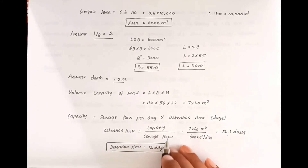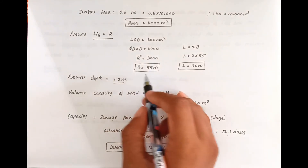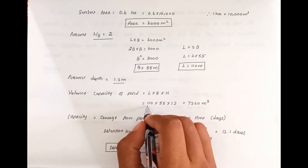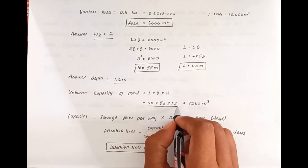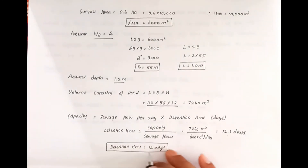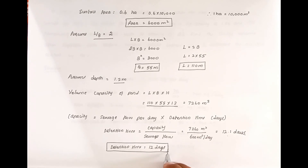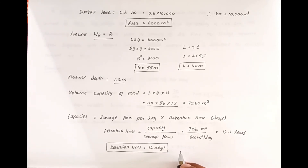So the final dimensions of the oxidation pond are: length 110 m × breadth 55 m × depth 1.2 m, with a detention time of 12 days. This completes the design of the oxidation pond. We will see the next video. Thank you.